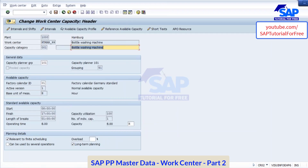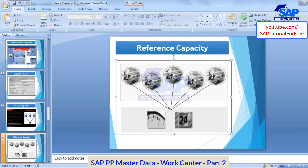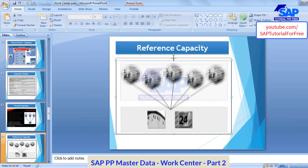Because we changed in the reference capacity which is assigned to this work center — this is called reference capacity. Hope this is clear. It is like a template, a common capacity which you can use in work centers. Instead of going to each and every work center maintaining that, you maintain a common one. This is how you use the reference capacity.